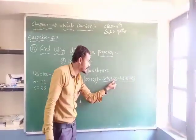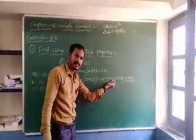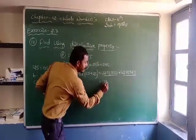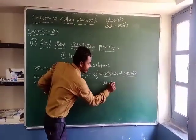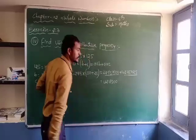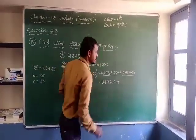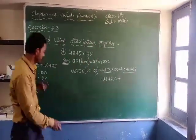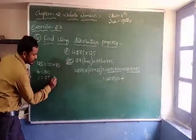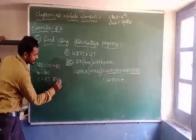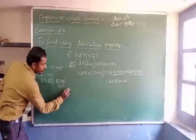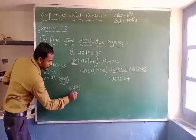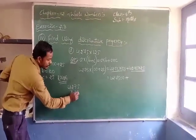Here, 100 is there — 100 has two zeros. So I directly write 4275 into 100, then plus the product of these two numbers. Just you have to do rough work here. Now, 4275 into 25.